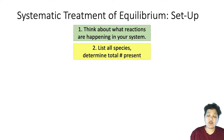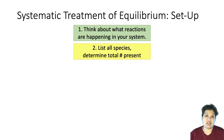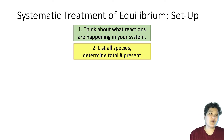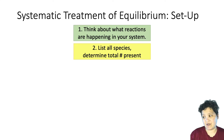For example, if you're doing an aqueous system you generally don't put water in as a species, because when we write our equilibrium constants we don't include water — it's a pure liquid. So we're not listing all species present; we're talking about all the species that would go into an equilibrium constant.